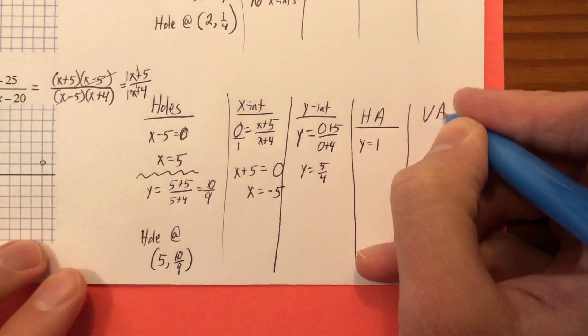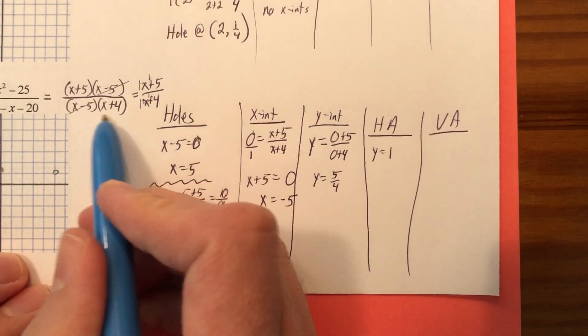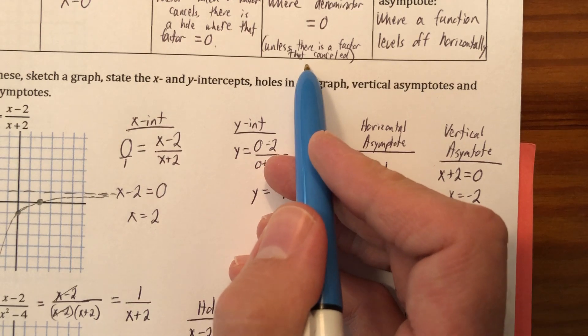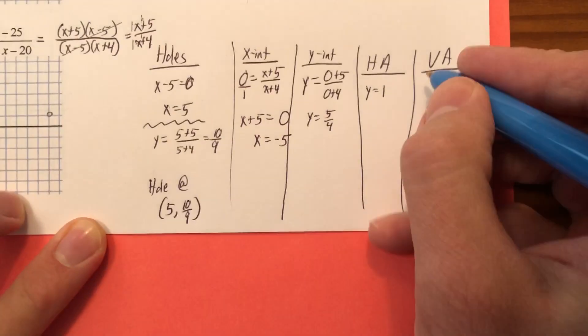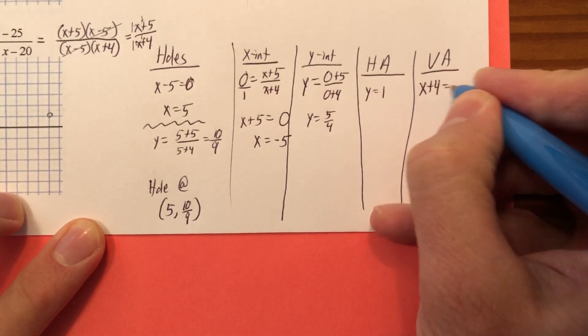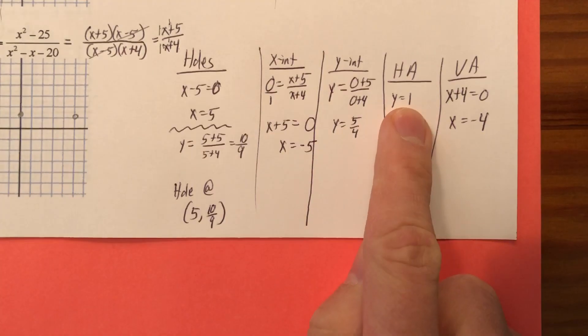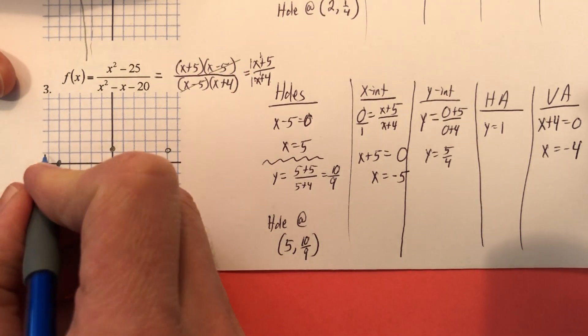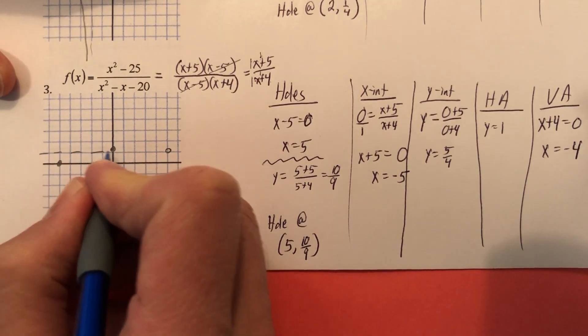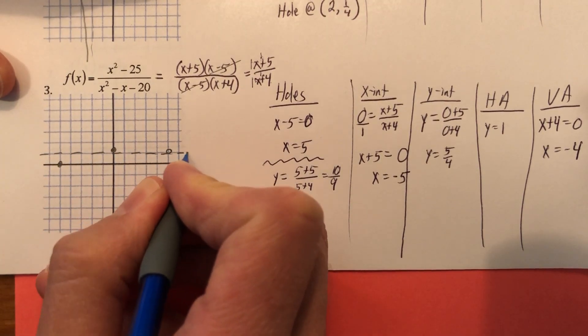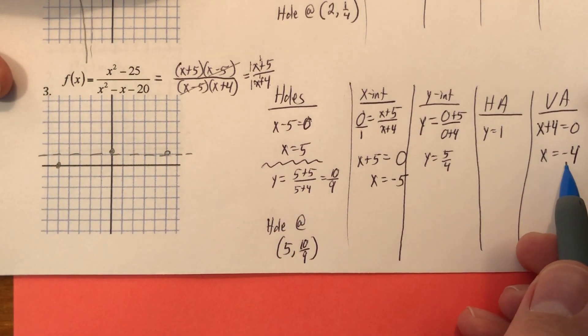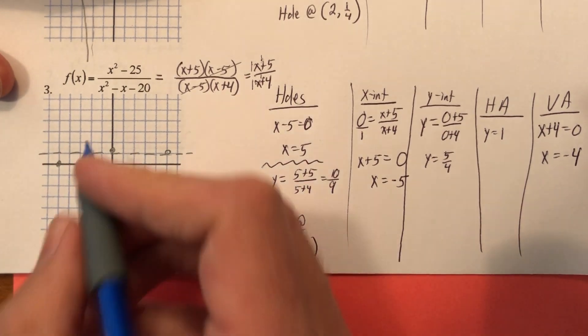And then my vertical asymptote is where my denominator equals 0. Not this denominator because we marked some stuff out, which is why I put that little phrase in there. But it's going to be where this equals 0. So X equals negative 4. Okay. So horizontal asymptote at Y equals 1.